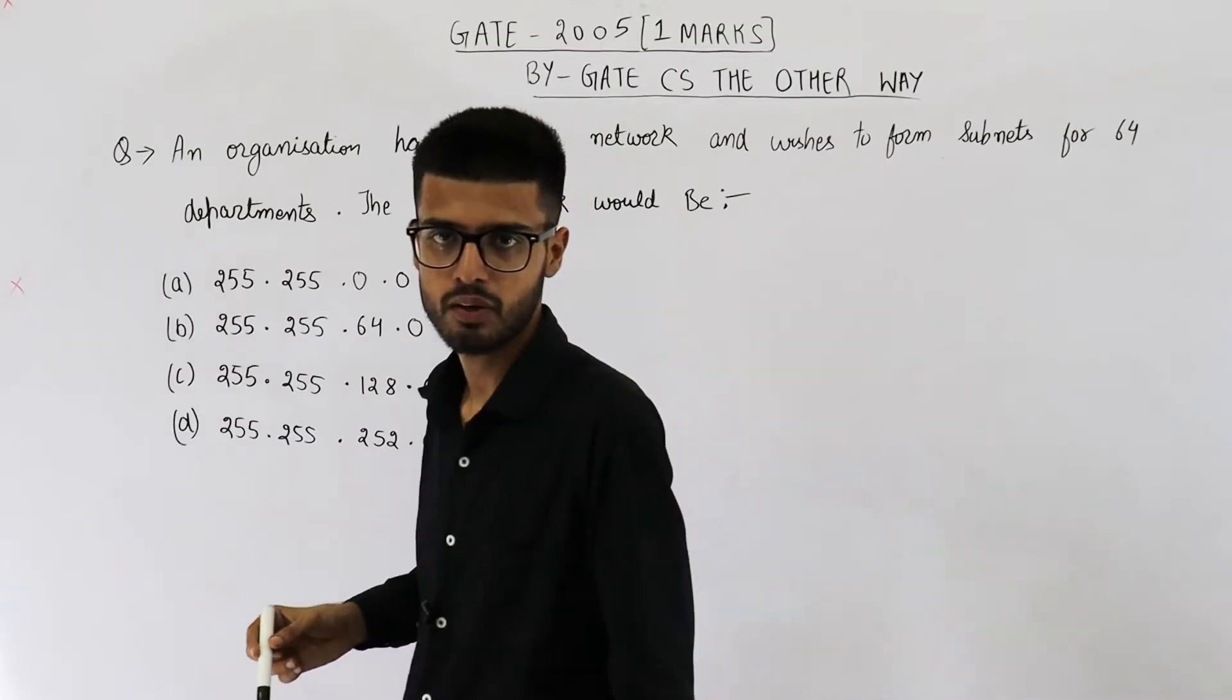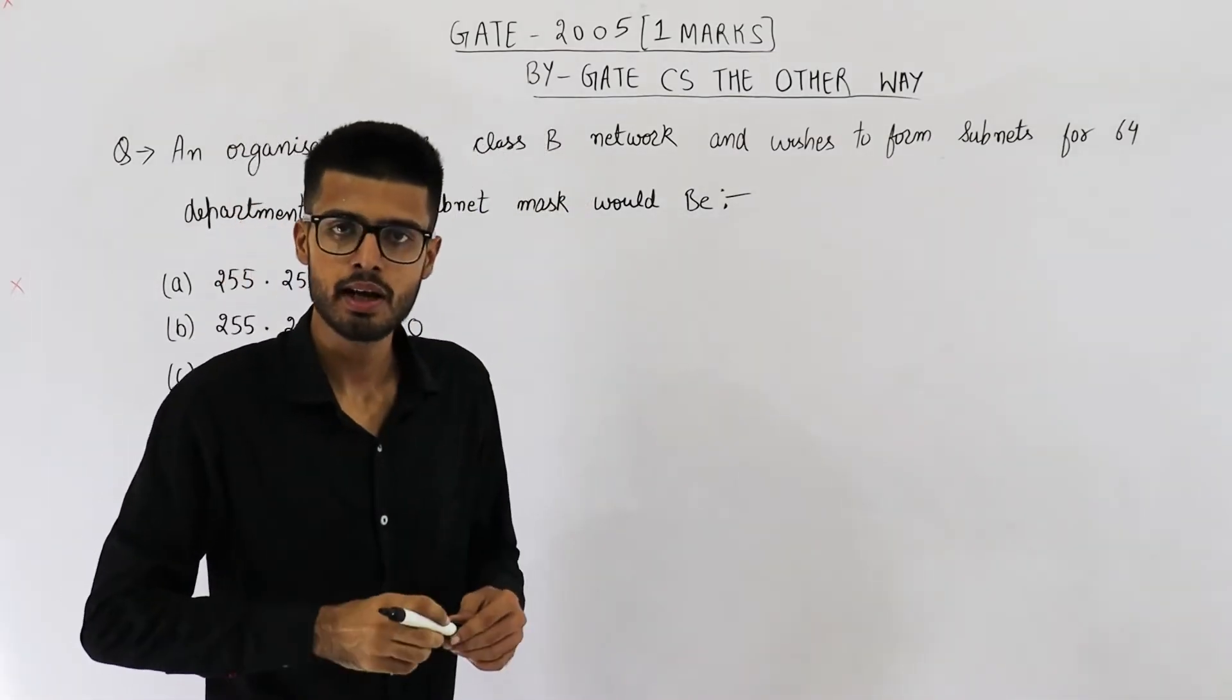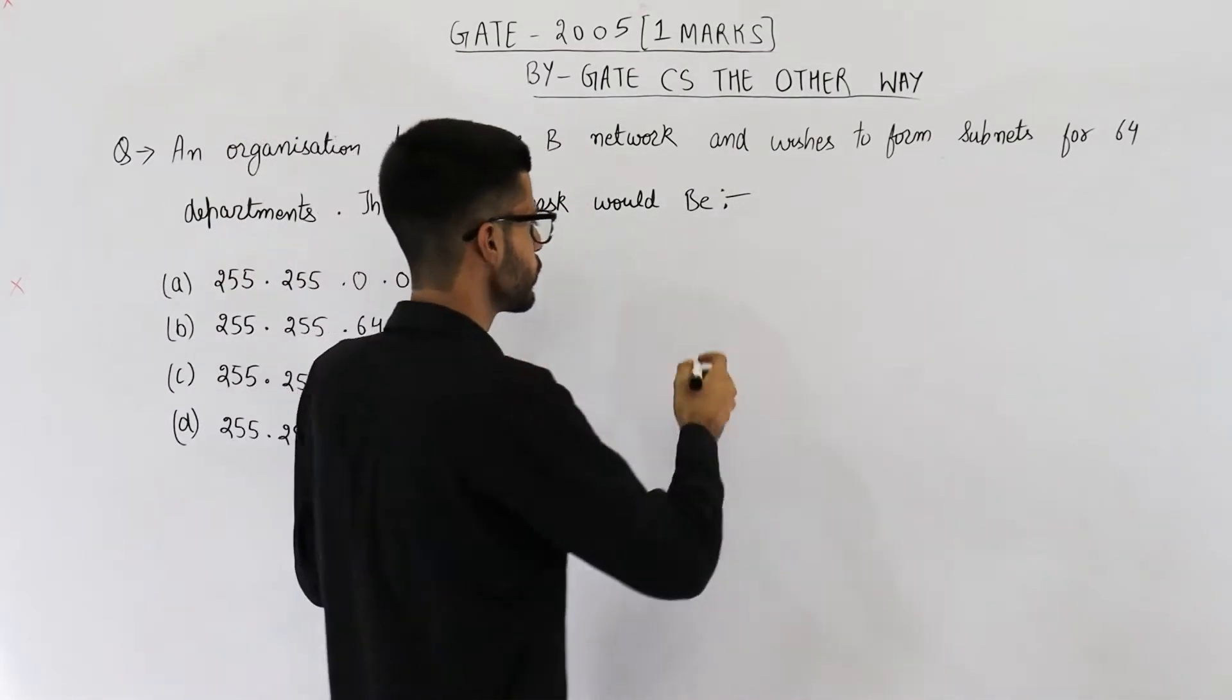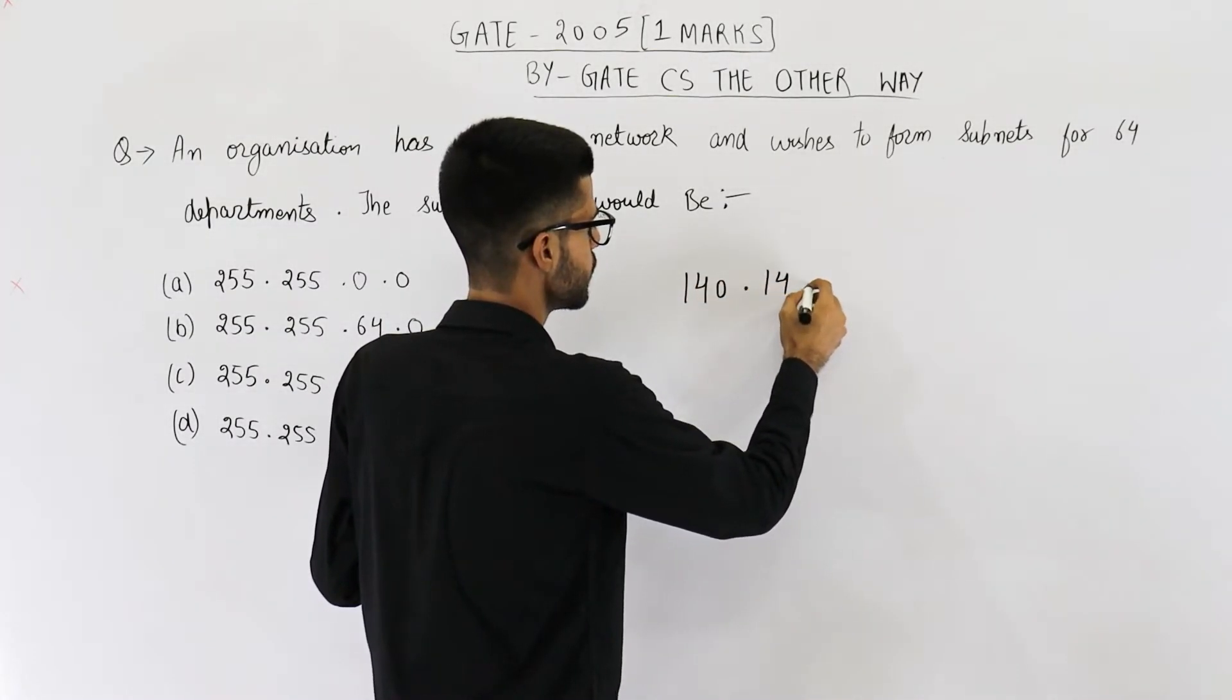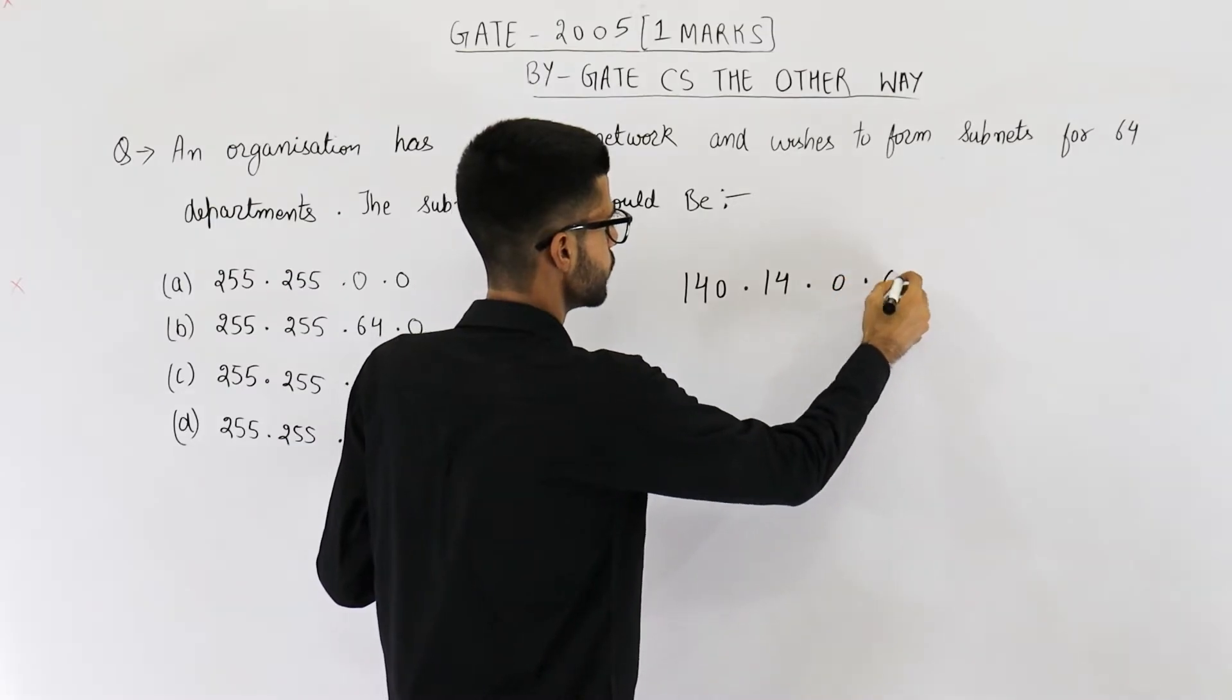So we have a class B network. What is the range of class B? It is 128 to 191. Suppose the network ID is this: 140.14.0.0.